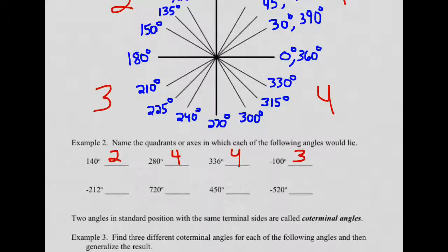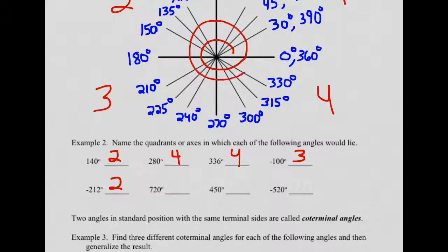It would be a good idea to pause frequently, once you think you've got the idea, to fill in the rest of the problems and then check to see if you got it right. Negative 212: here's negative 180, go past that a little. Negative 210 would be right here, so negative 212 is just a little past that, but it's in the second quadrant. 720 degrees means you wind around — one full revolution is 360, another full revolution doubles that to 720 — so that lies on the positive x-axis.